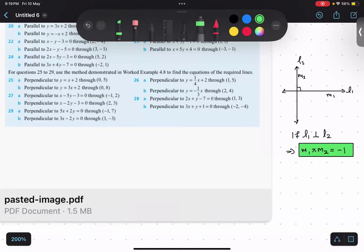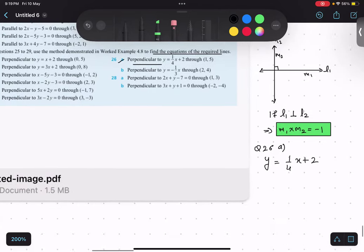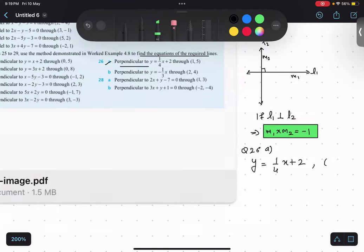Now, based on this understanding, we will do a few questions. Let us start with 26a part. Question is saying, find the equation of the required line which is perpendicular to this line. So, we have an equation y equals to 1 by 4 x plus 2, and it is passing through 1 comma 5.